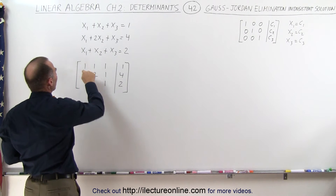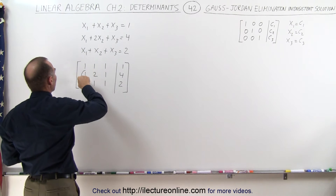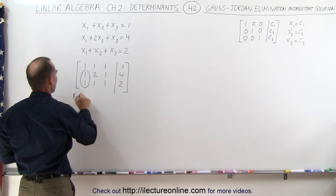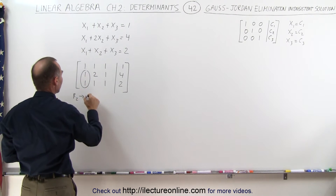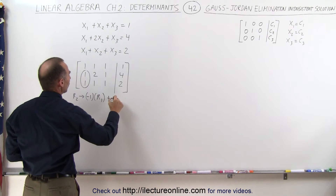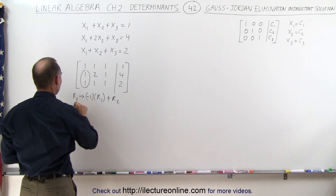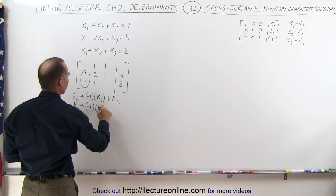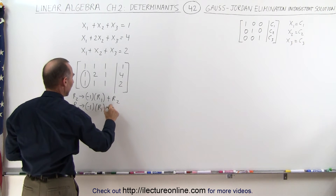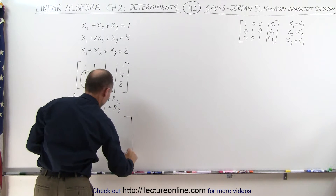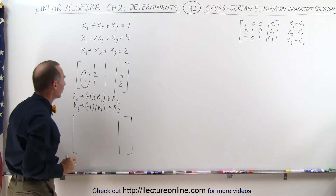Since we already have a 1 in the upper left corner, we're going to try to get rid of the two 1s below it. Row 2 can be replaced by negative 1 times row 1 added to row 2. We do the same for the third row: negative 1 times row 1 added to row 3.